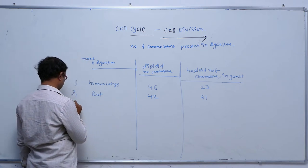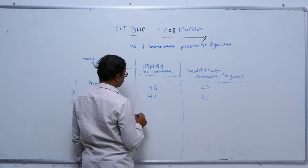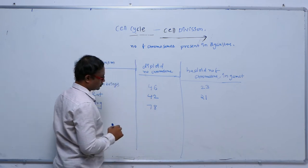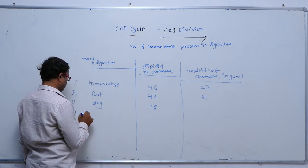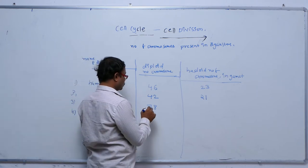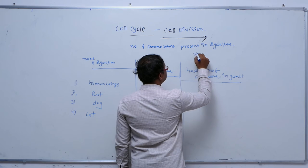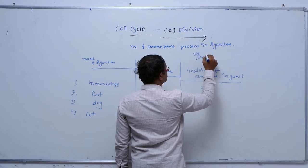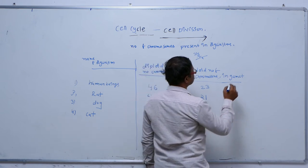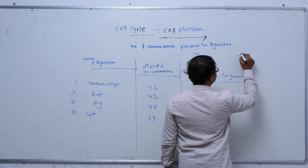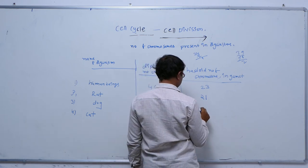After that, dog — the diploid number of chromosomes is 78. So in the dog, diploid number of chromosomes is 78, which means the haploid number of chromosomes is known as 39.